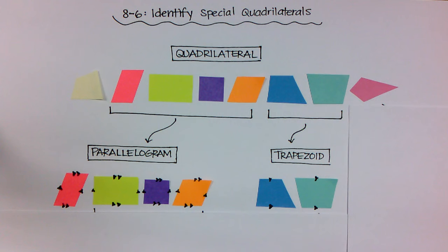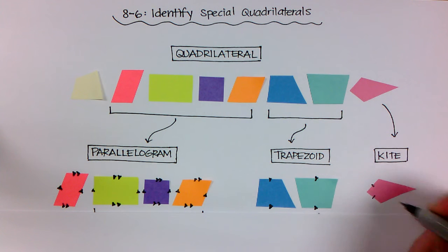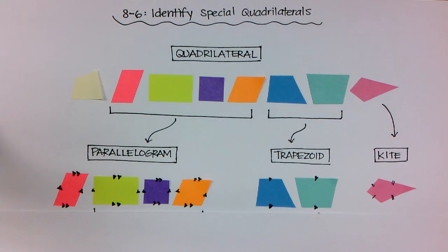And furthermore, this pink shape at the top can be classified as a kite, which means that it had two consecutive congruent sides and another two consecutive congruent sides. And that's what we would call a kite.